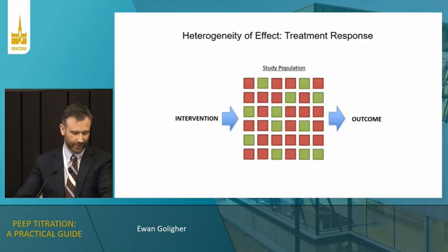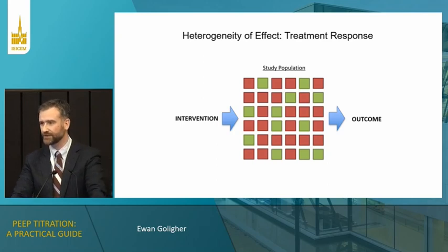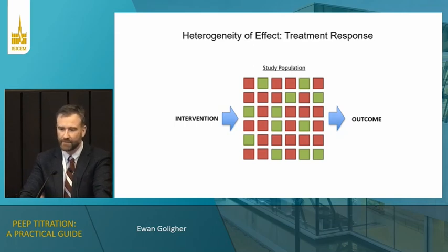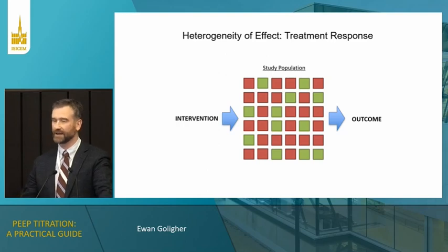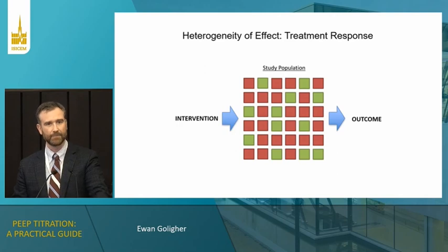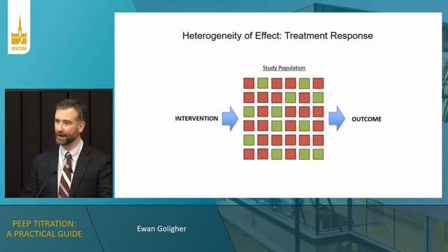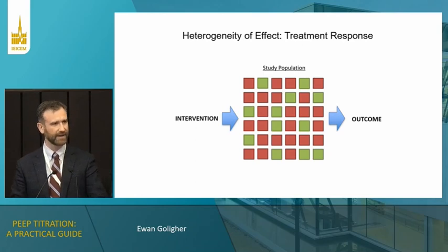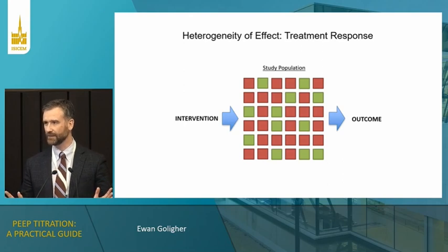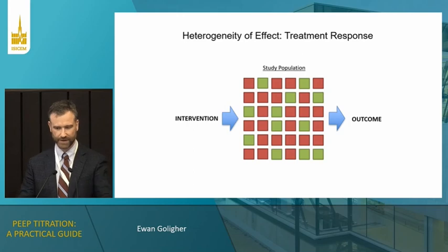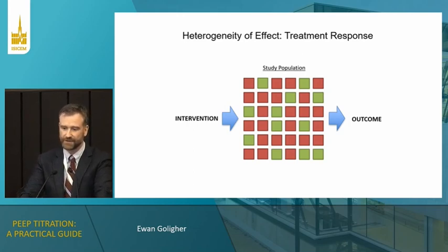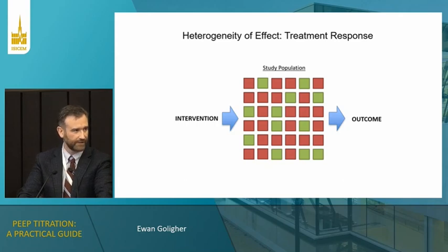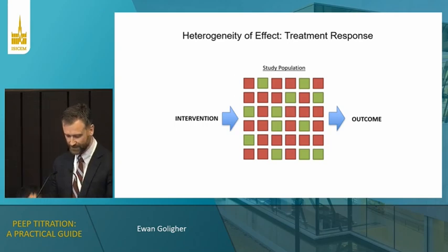The problem is this notion of heterogeneity of treatment effect. Some patients respond favorably to an increase in positive end-expiratory pressure and some don't. Part of our challenge in previous trials of higher versus lower PEEP strategies is that we haven't done a good job of selecting out responders and non-responders. Clinicians intuitively know that some patients have a favorable response and some don't — the failure has perhaps been to build that clinical intuition into the trial design. Not everybody responds favorably, so we must take a more individualized approach.